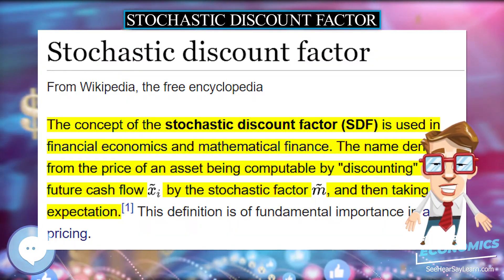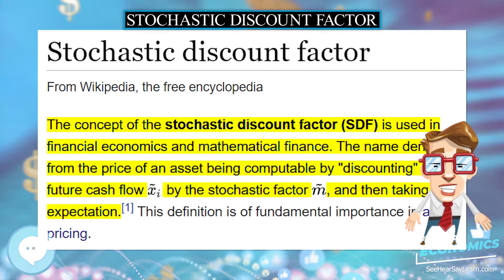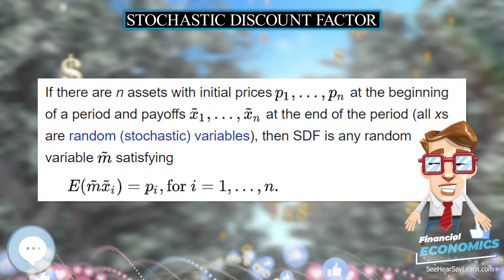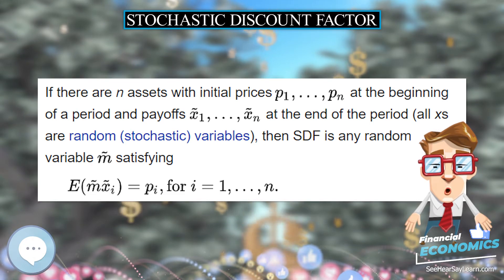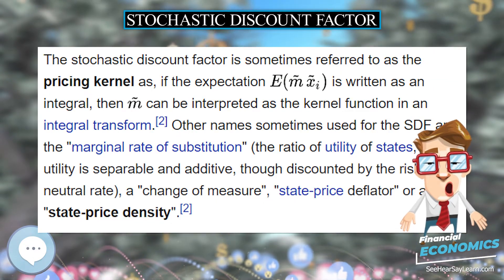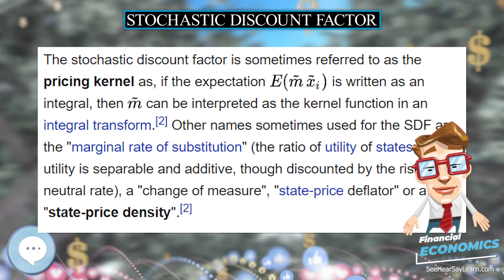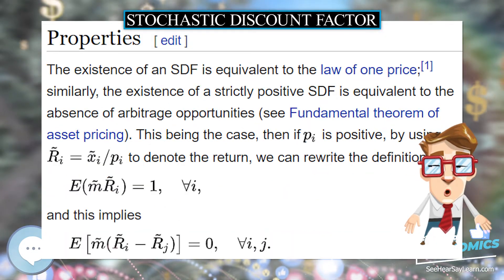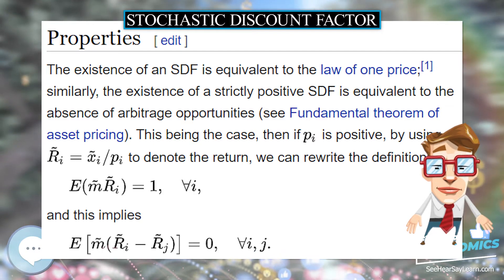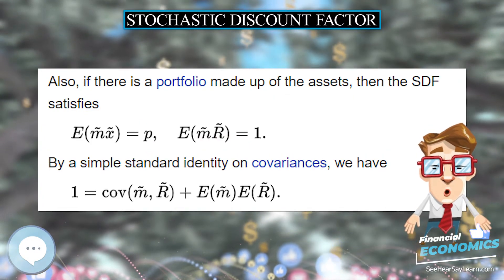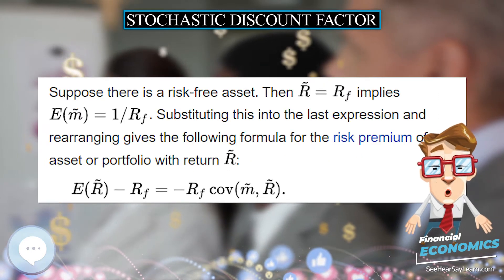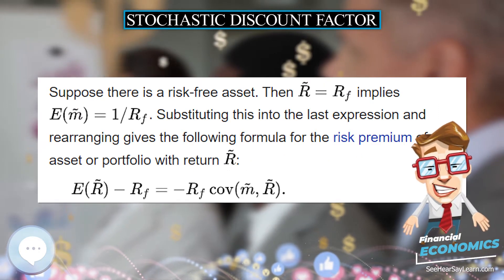The Stochastic Discount Factor is sometimes referred to as the pricing kernel. This name comes from the fact that if the expectation E[M · X_i] is written as an integral, then M can be interpreted as the kernel function in an integral transform.